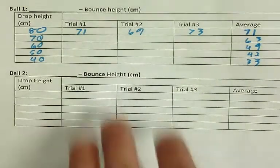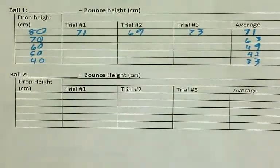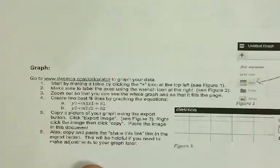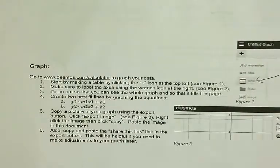Alright, so once you've got that, we're ready to do the graph. So the directions for the graph are here. Let me go through them very quickly and then I'll show you how to do them one step at a time. So the first thing you're going to do is go to desmos.com backslash calculator. Okay, that's going to look like this.